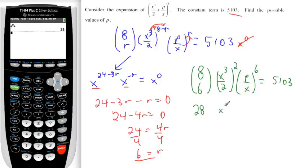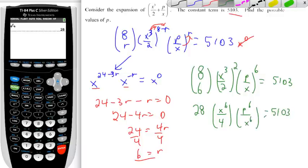Now you have x to the 6 over 2 squared is 4, p to the 6 over x to the 6, expanding this, 5103. So what you can see is that these x to the 6 disappear, which is exactly what you wanted to happen. 28 divided by 4 is 7.